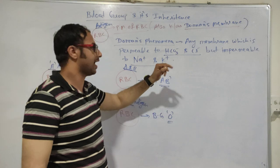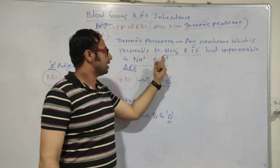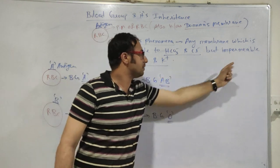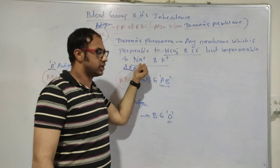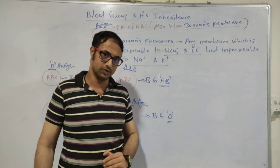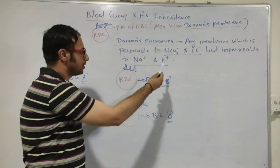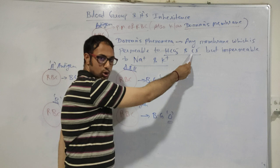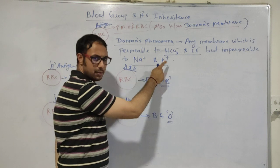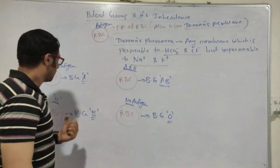The Donance phenomena states that any membrane which is permeable to bicarbonate ion and chloride ion, but impermeable to sodium ion and potassium ion, follows the Donance phenomena. The plasma membrane of RBC is impermeable to bicarbonate and chloride ions but permeable to sodium ion as well as potassium ion — that is why it is called the Donance membrane.